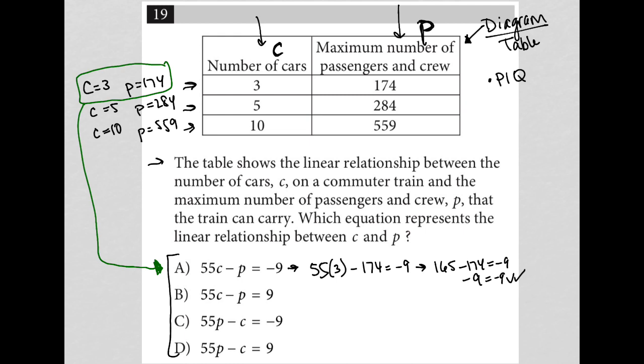And that makes choice A correct. There's really no other option. There's no real need to even try any of the other ones. We can see that there's no way B is correct, for instance, because the same exact left side as choice A, but then we have a positive 9. So that's not possible.